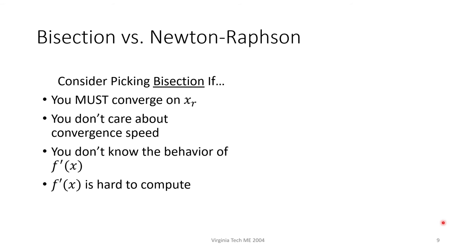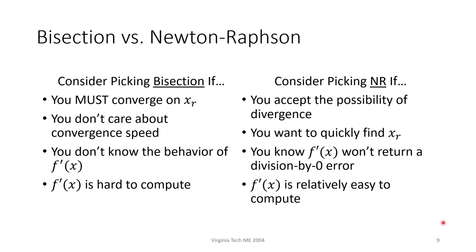On the other hand, I would pick Newton-Raphson if I wanted to quickly find the root since it's generally faster than bisection. If I knew ahead of time that the derivative is relatively easy to compute, I would also use this method, especially if I know I won't get a division by zero error.